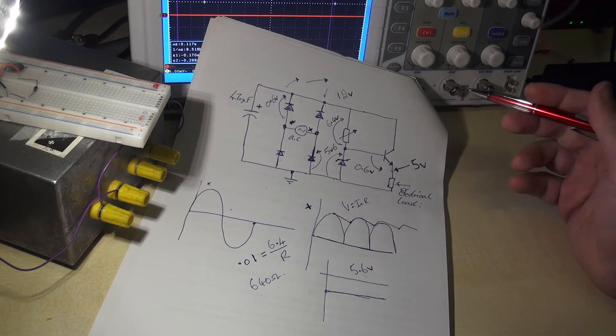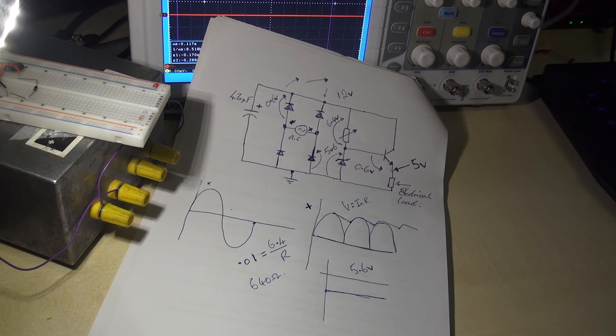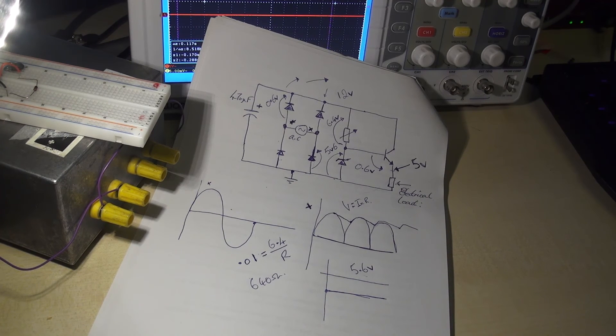And that's basically how this thing works. It's the simplest version of a series pass Zener regulator you could probably build, but it's a really good learning tool for further study in the field. If there are any questions, just contact me. Hopefully I've covered most of it.